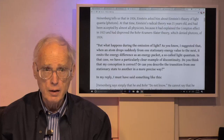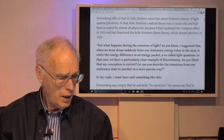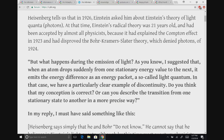Heisenberg tells us — from a book called Physics and Reality — that Einstein asked him about Einstein's theory of light quanta. By this time, Einstein's radical hypothesis was 21 years old, going back to 1905, and had been accepted by most physicists because it had explained the Compton effect, in which light particles bounce off material particles obeying the laws of collisions between particles. That was the first really deep clarification and belief that Einstein had it right.